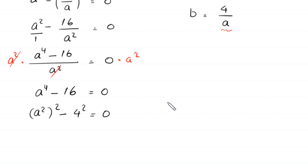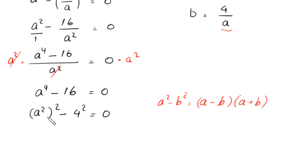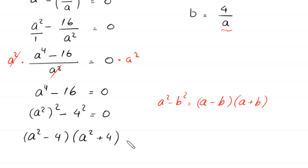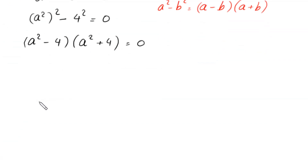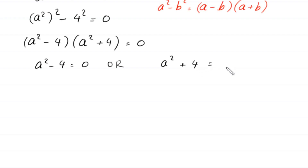Using the algebraic identity a squared minus b squared equals a minus b times a plus b, this expression a squared whole squared minus 4 squared becomes a squared minus 4 times a squared plus 4, equals 0. So either a squared minus 4 equals 0, or a squared plus 4 equals 0.